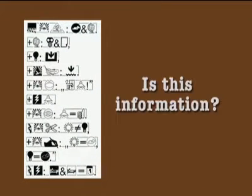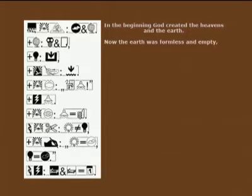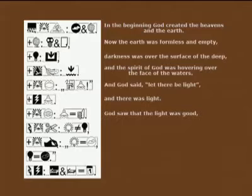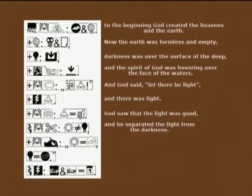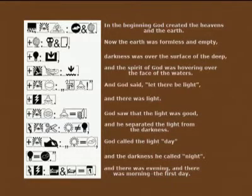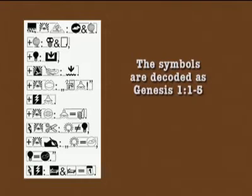Now I have another example — could this be information, this script you see here on this picture? At the moment we cannot say what it is. But let me give the solution. 'In the beginning, God created the heavens and the earth. Now the earth was formless and empty. Darkness was over the surface of the deep. And the spirit of God was hovering over the water. And God said, let there be light. And there was light. God saw that the light was good. And he separated the light from the darkness. So God called the light day and the darkness he called night. And there was evening and there was morning the first day.' You see, there is a special code system and we can translate the complete Bible in this way. So therefore, we can say this example is inside of the definition domain.